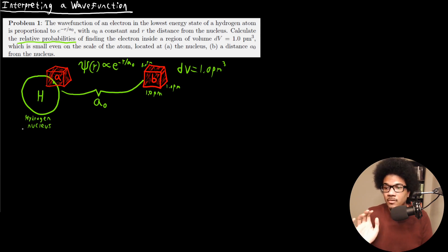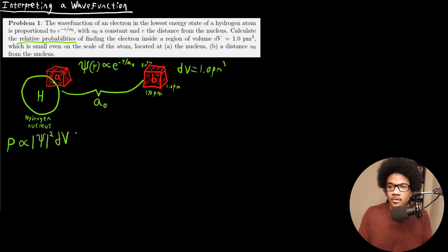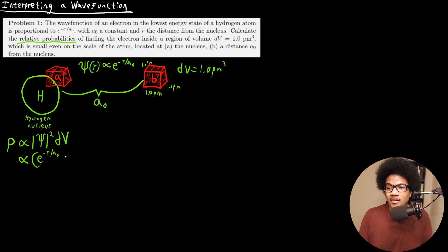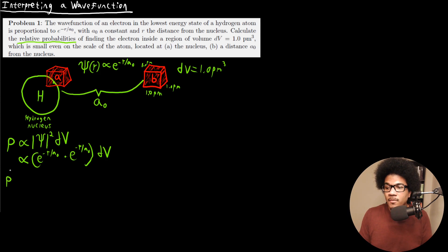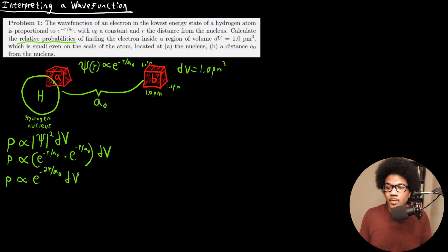We want to square the wave function. The probability is going to be proportional to the square of the wave function — this is from the Born interpretation, which says probability equals the square of the wave function times that change in volume dV. Plugging in our wave function, that's e to the negative r over a-naught times e to the negative r over a-naught, times dV. Since this isn't a complex number, we just square this function. So the probability is proportional to e to the negative 2r over a-naught times dV.